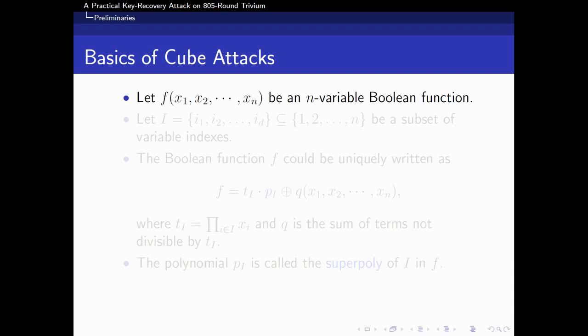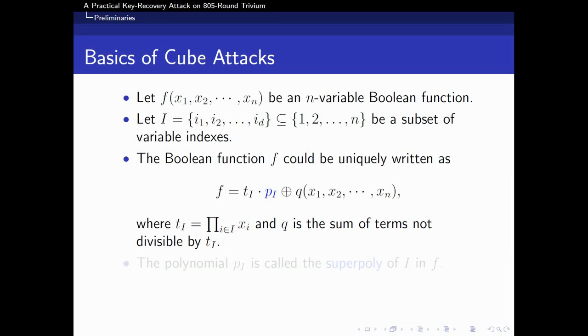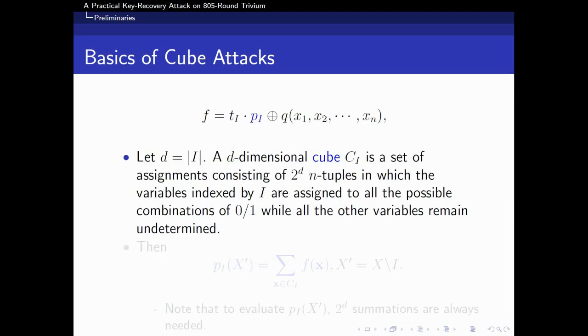Let f be an n-variable Boolean function and I be a subset of variable indexes. Then f could be written as following. The polynomial p_I is called the superpoly of I in f. A d-dimensional cube is a set of assignments consisting of 2^d n-tuples, in which the variables indexed by I are assigned to all the possible combinations of 0 or 1, while the other variables remain undetermined. Then p_I is equal to the summation of function derived by each element in c_I. Note that to evaluate p_I, 2^d summations are always needed.